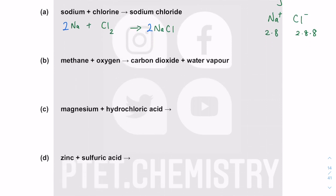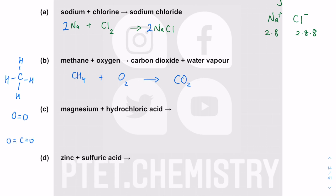The next example is methane — a case study among the simple covalent molecules you are expected to draw from the syllabus. Oxygen exists as a diatomic molecule, doubly bonded, because group 6 has 6 valence electrons and shares 2 electrons with its neighboring oxygen to achieve a fully filled outer shell. Carbon dioxide is another simple molecule. Water vapor is just H2O as a gas.